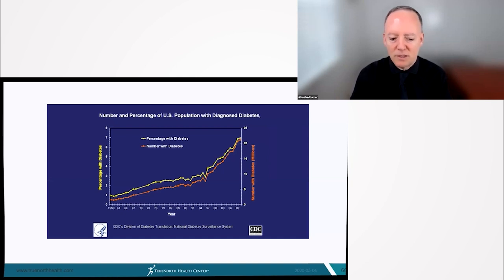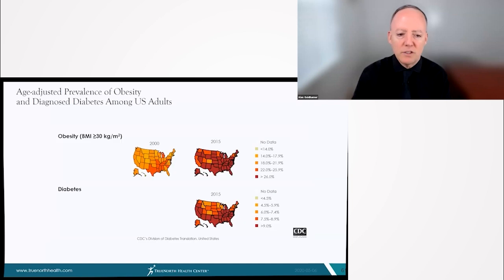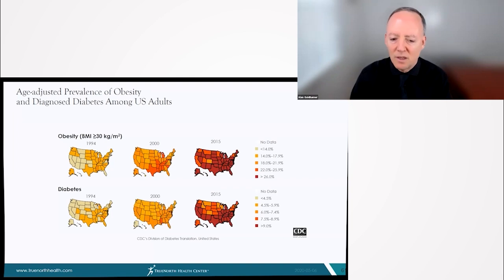Diabetes, for example, has increased geometrically. In fact, the correlation coefficients between increasing obesity and increasing diabetes are almost one-to-one. The fatter we get, the more insulin resistance we have, the more the incidence of diabetes.